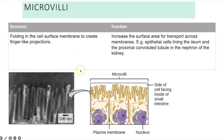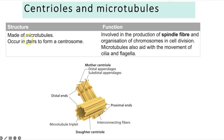Centrioles are made up of microtubules and occur in pairs to form a centrosome. Their function is to produce spindle fibres, which organise chromosomes into particular positions during cell division. Microtubules also aid with the movement of cilia and flagella.